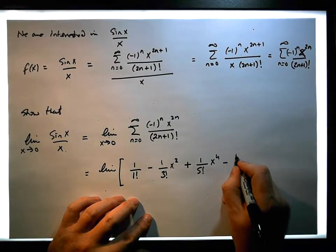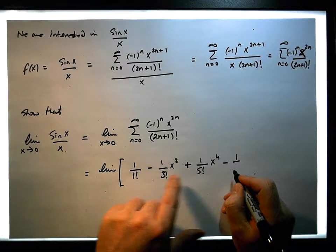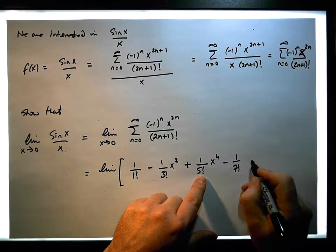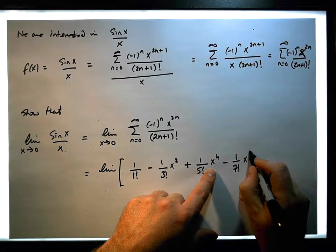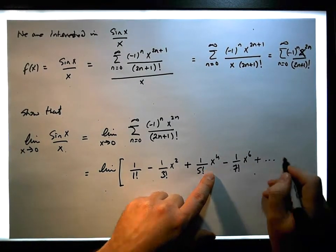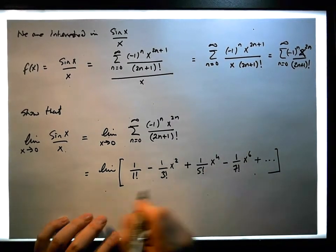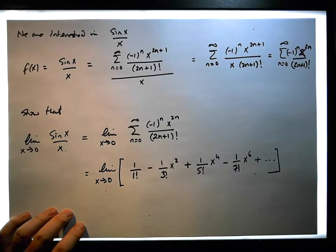The next term is going to be minus 1 over 7 factorial, all to the power of x to the power of 6, plus and all the way through. And it's that expansion as x tends to 0 that we're interested in.